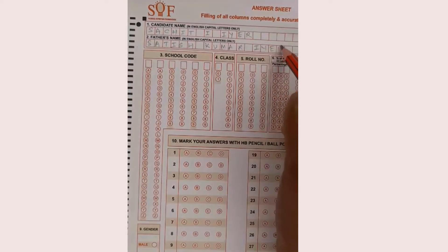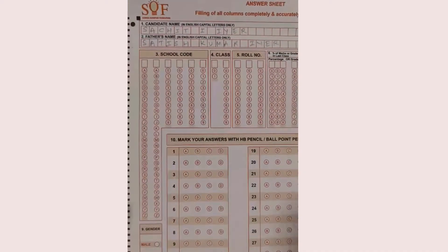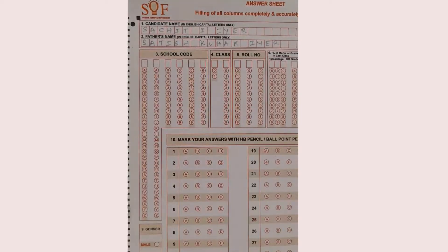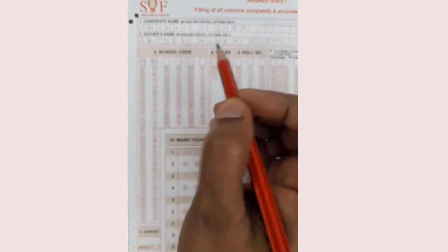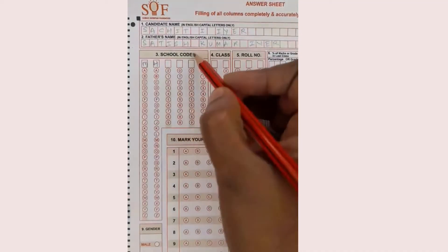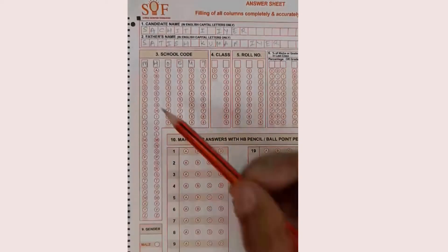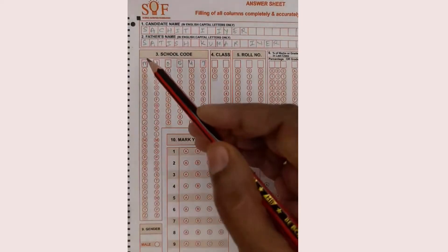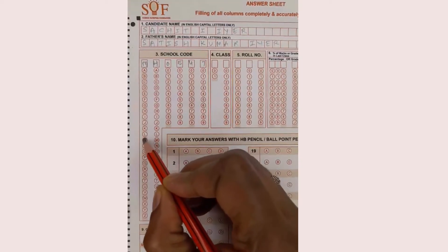Go one by one for all the questions. Now we go to question number three, which is your school code. This code you will receive from your school — your teacher will tell you. For example it can be MH0547. Filling up these dots is really important, so what we do is circle that nicely.